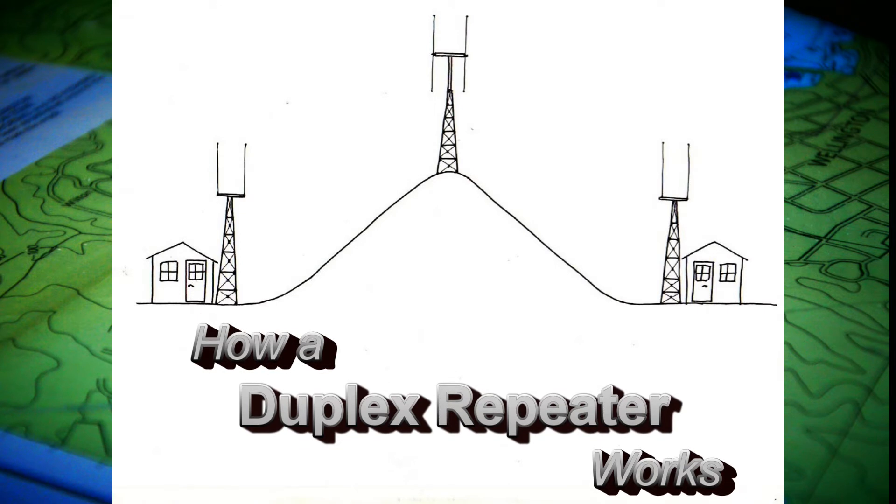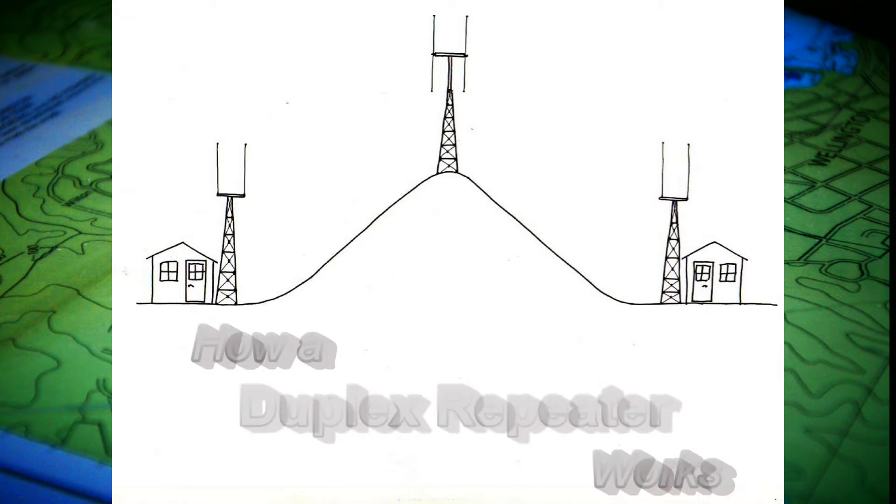Here's our diagram. We've got a building on either side of a hill with a radio mast. That's representing you and your radio. Now the radio mast at the top of the hill is representing the repeater.